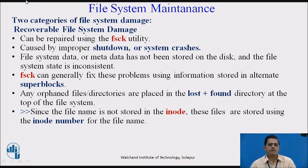There are two categories of file system damage. The first is recoverable file system damage, which can be repaired using the FSCK utility and is caused by improper shutdown or system crashes. File system data or metadata had not been stored on the disk, and the file system state is inconsistent. FSCK can generally fix these problems using information stored in alternate super blocks. Any orphaned files or directories are placed in the lost+found directory, which is an important directory where all deleted files are stored at the top of the file system. These files are stored using the iNode number for the file name.